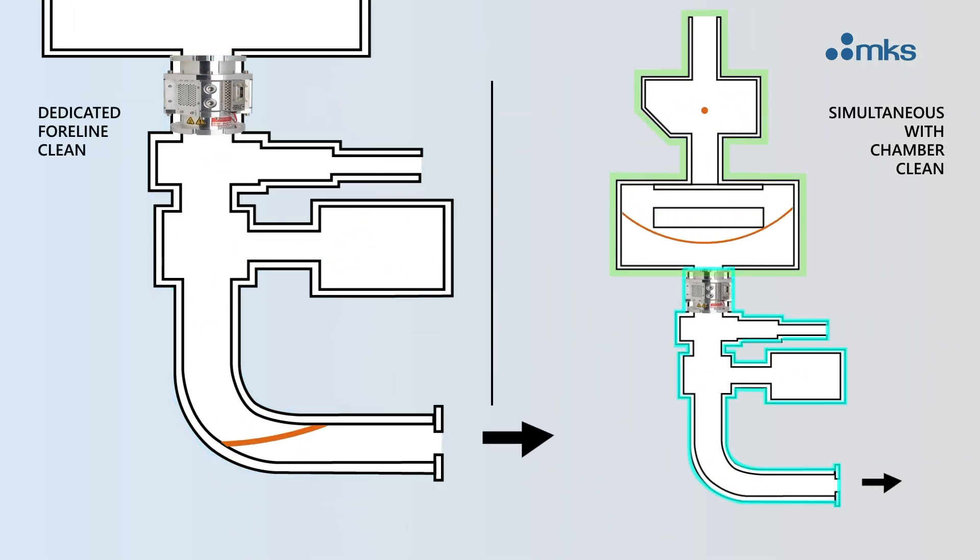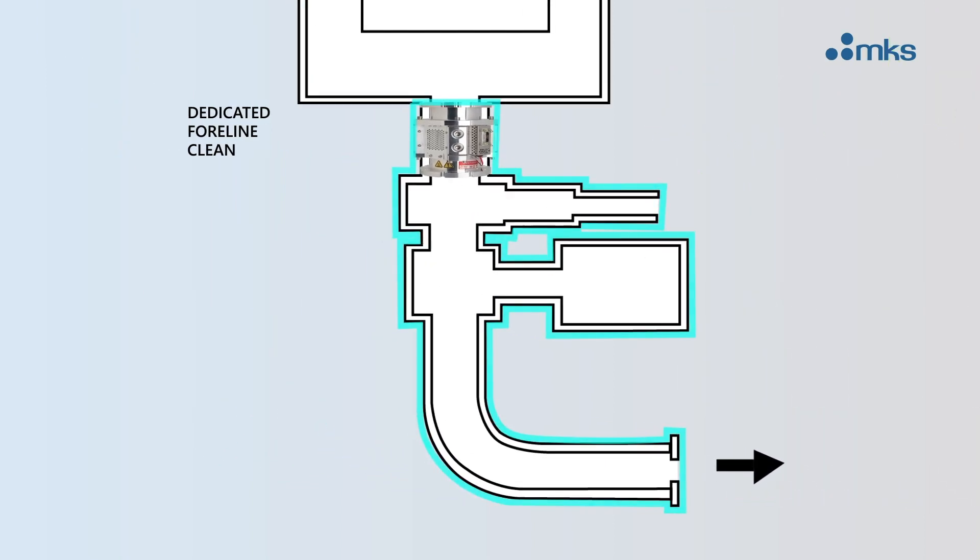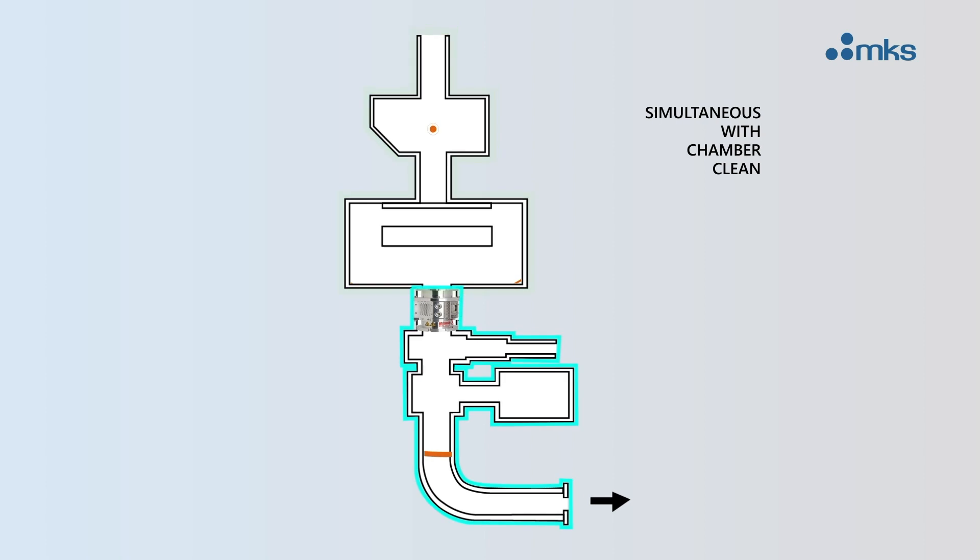MKS offers the Cleanline foreline plasma clean system with multiple operational modes. The dedicated foreline clean mode enables optimized foreline cleaning after each process step. The Cleanline system can also run simultaneously with the RPS chamber clean without affecting throughput.